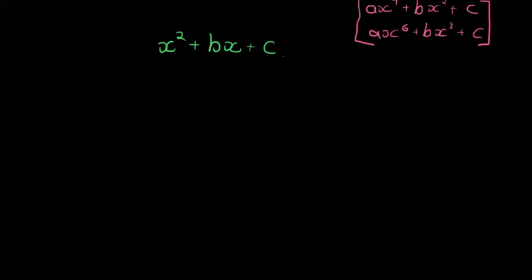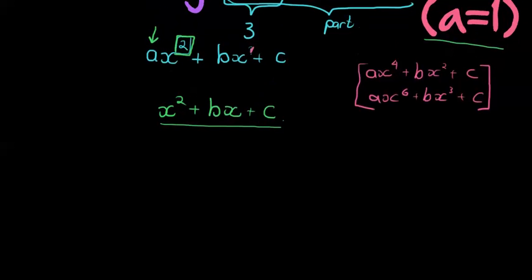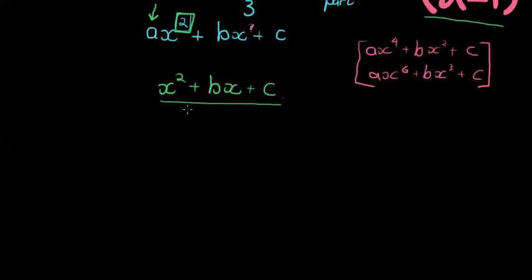Now before I go on to give you the rules, let me first just show you how do we actually get to this. Remember we're trying to factorize an expression like this, and factoring means writing it as the product of two or more expressions. In this case, what can we multiply to get three terms?